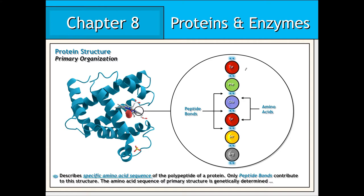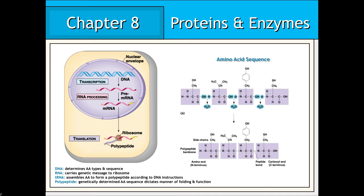As we can see, the amino acids that comprise a polypeptide chain are joined together exclusively by peptide bonds. The specific amino acid sequence of a polypeptide chain contributing to primary structure is genetically determined. The unique sequence of nucleotide bases within genes of the DNA molecule determines the exact type and sequence of amino acids that make up a polypeptide chain's primary structure.